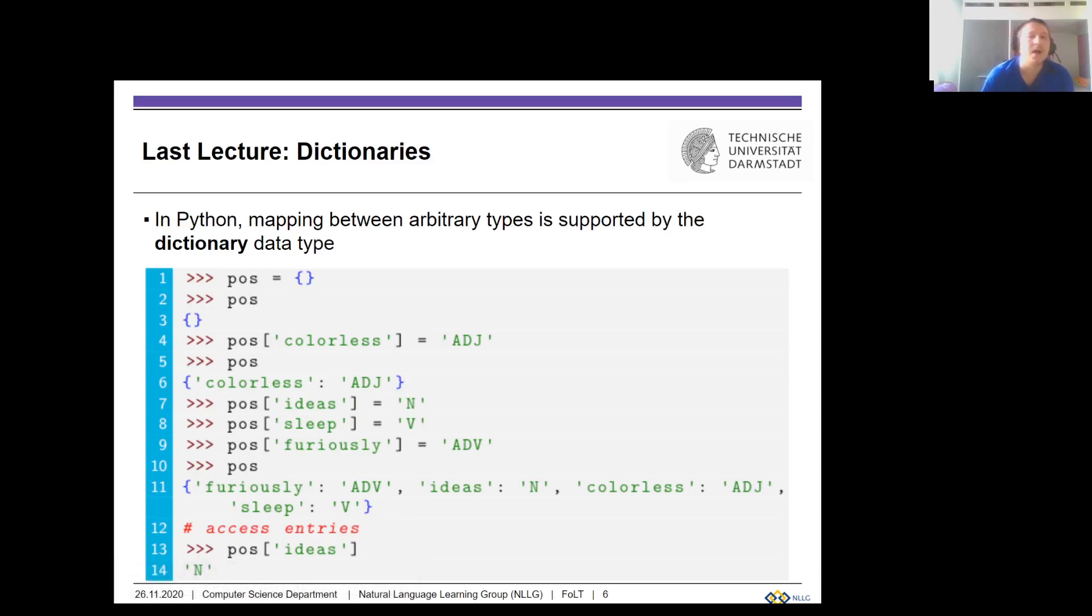We've also seen the very important data structure of a dictionary, which allows you to map between arbitrary types. In this example, we have a dictionary called 'pos' which stands for part of speech. We can assign to the pos dictionary that the word 'colorless' is an adjective, 'ideas' is a noun, 'sleep' is a verb, etc. This is a very convenient data structure that you may want to use very frequently in Python.